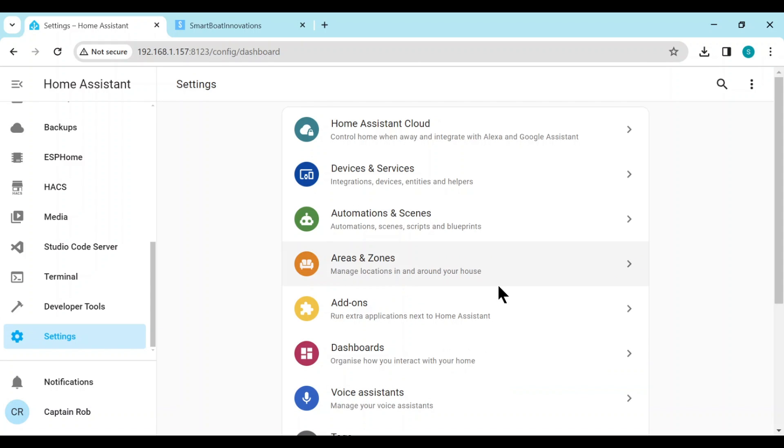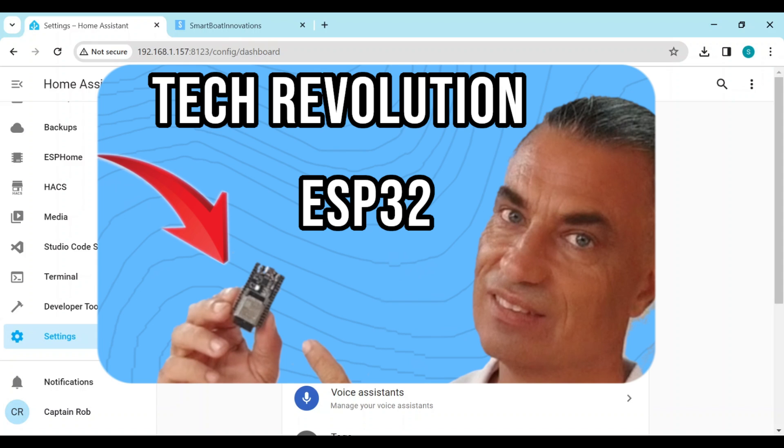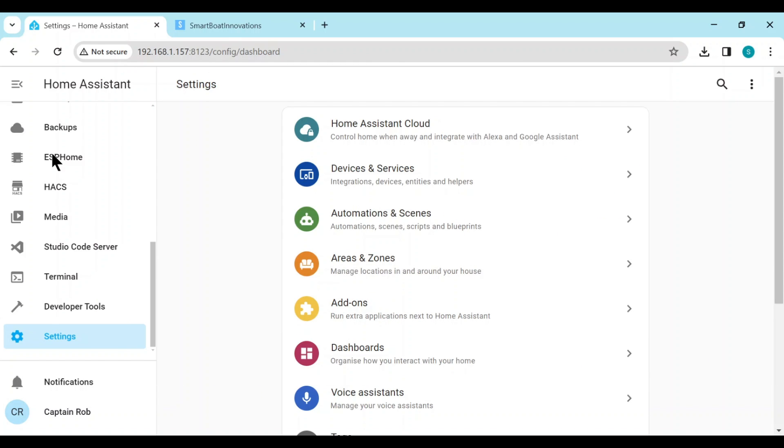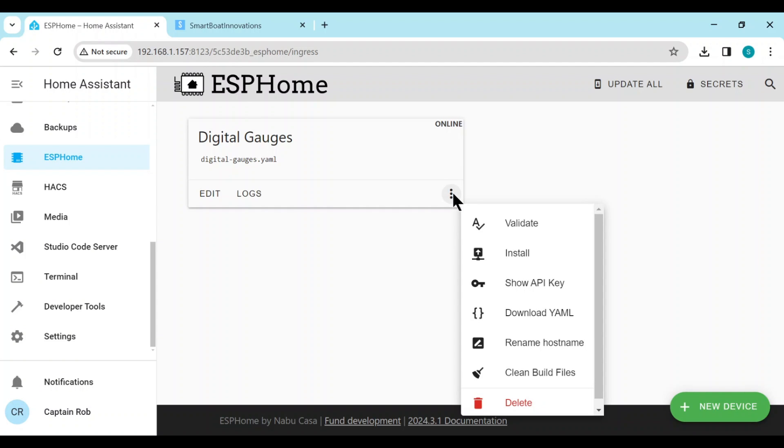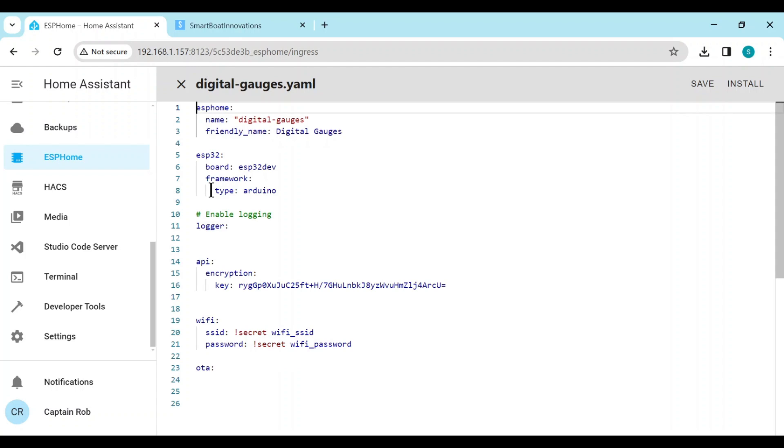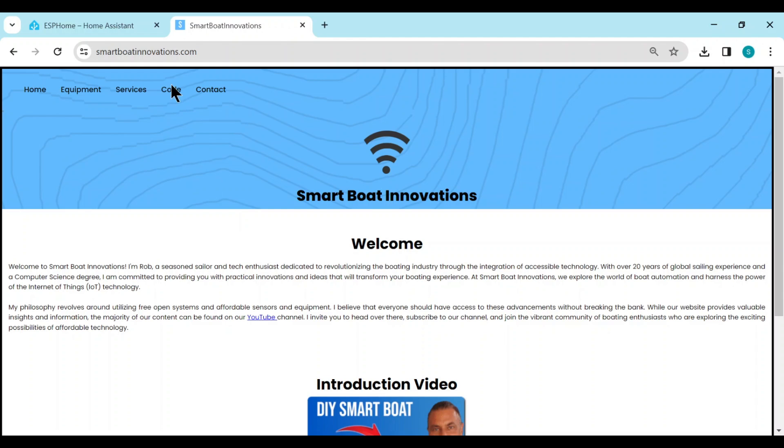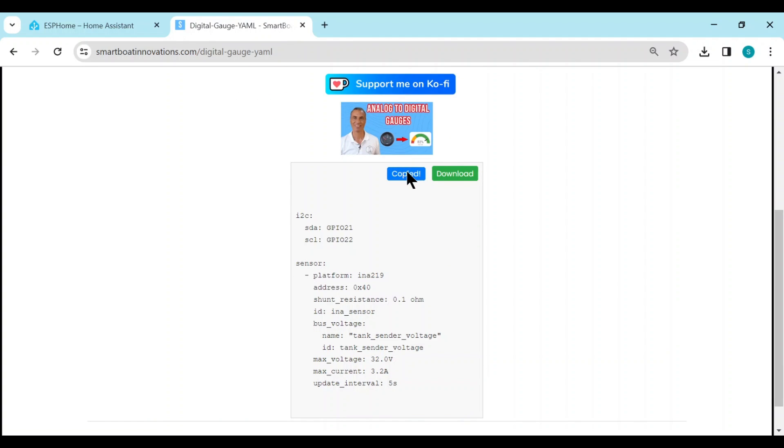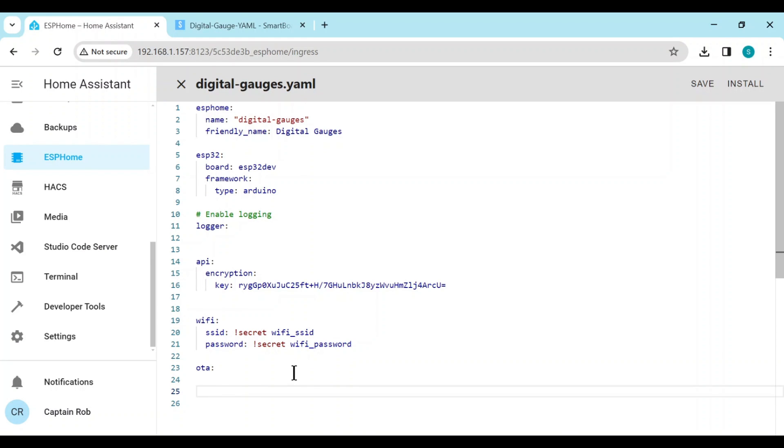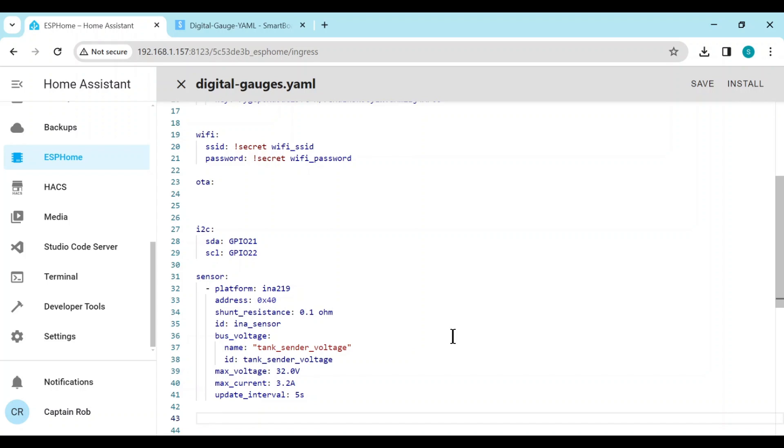Here we are in Home Assistant. To follow on with this part, you really need to have watched the ESP32 video and have created an ESP32 device. I've created one. If you go to ESP home, I've created an ESP32 device and I've named it digital gauges. If you want to rename these, you can just rename the host name down here. If we go to edit, it's an empty YAML. This is basically the basic one. To make life easier, I've on my website, I've put the YAML you need to put in here. If you go to my website, smartboatinnovations.com and then go to code and then scroll down and go to the digital gauge YAML. And let's just copy this bit of code, put it back into here and paste.